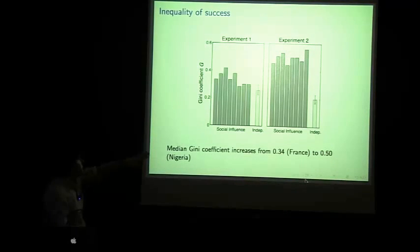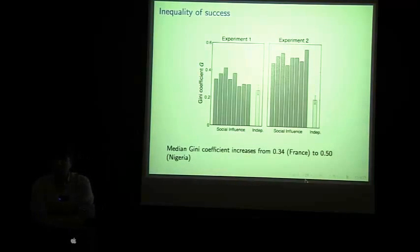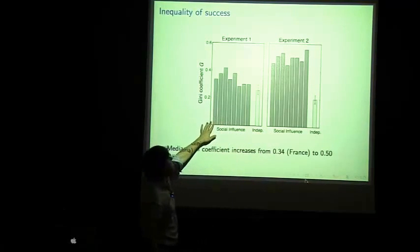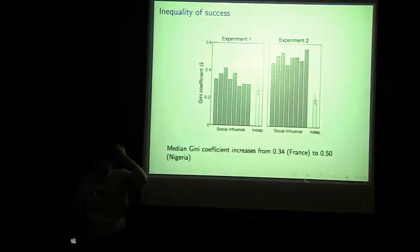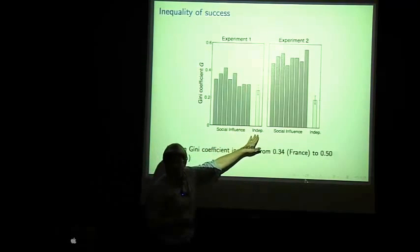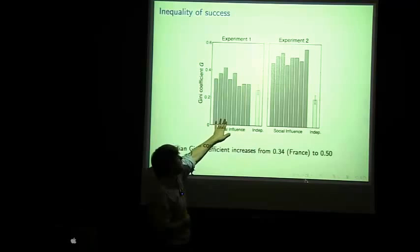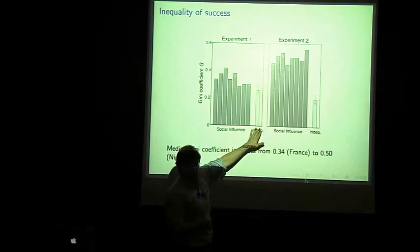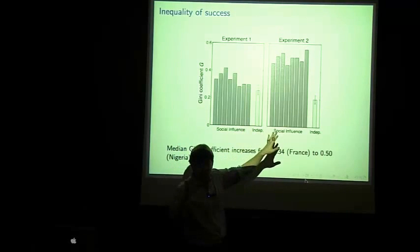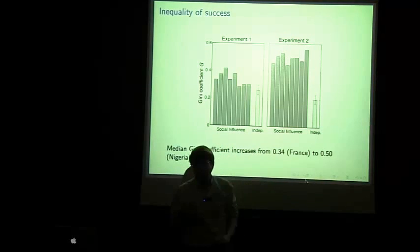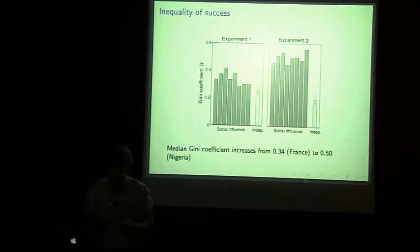So, here's what we found. This is a graph showing the inequality of success in experiments one and two, measured in terms of the Gini coefficient, which is a standard measure of inequality. Here are the eight social influence worlds and here's the independent world from experiment one. And we see that the results in the social influence world are more unequal than they are in the independent world, which is what we had predicted. And that when we increase the amount of social influence, the amount of inequality goes way up. The stars become megastars and the flops become megaflops.